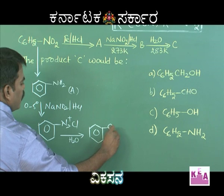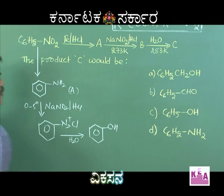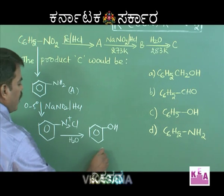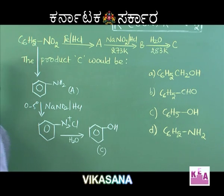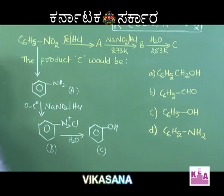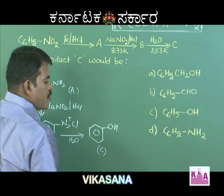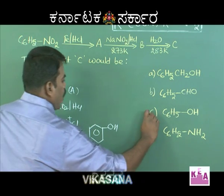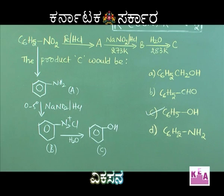So, compound C must be phenol, and compound B must be benzene diazonium salt. Among the four options given, the correct answer is option C — phenol.